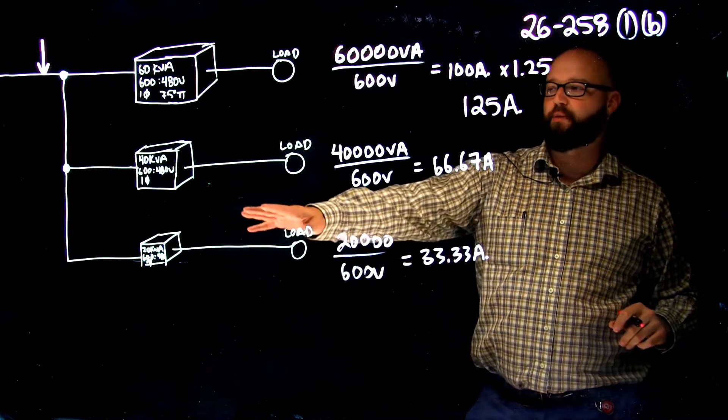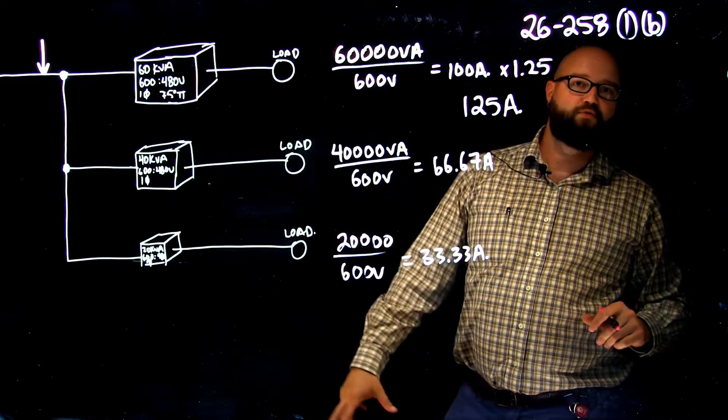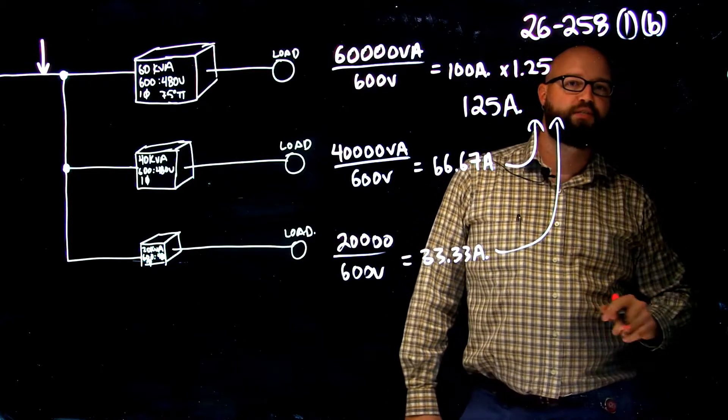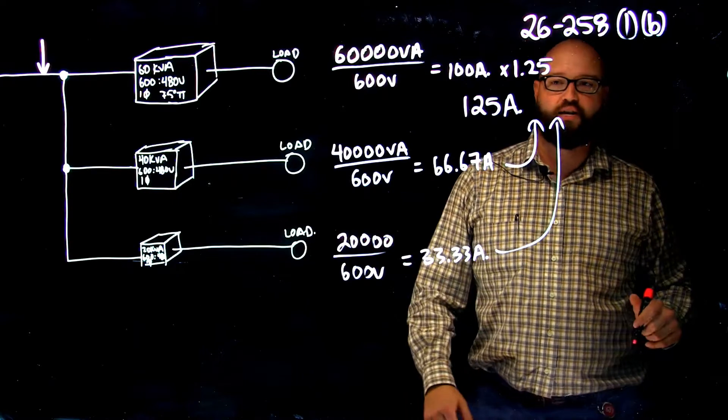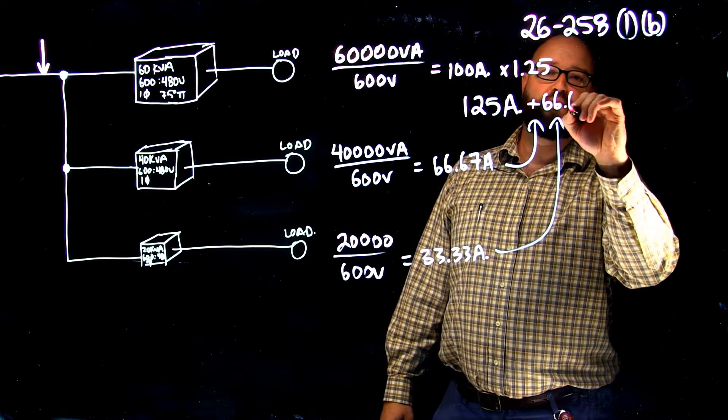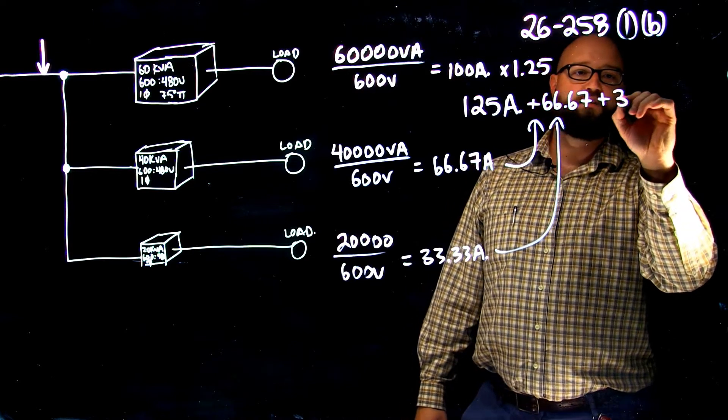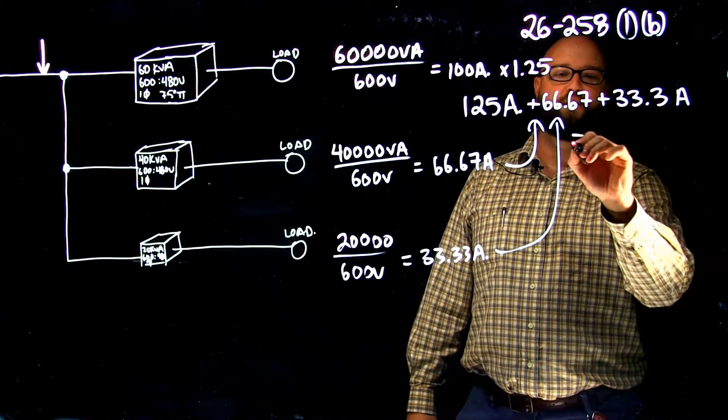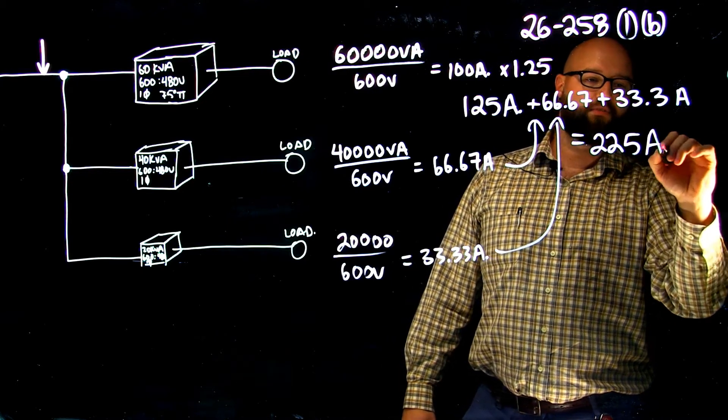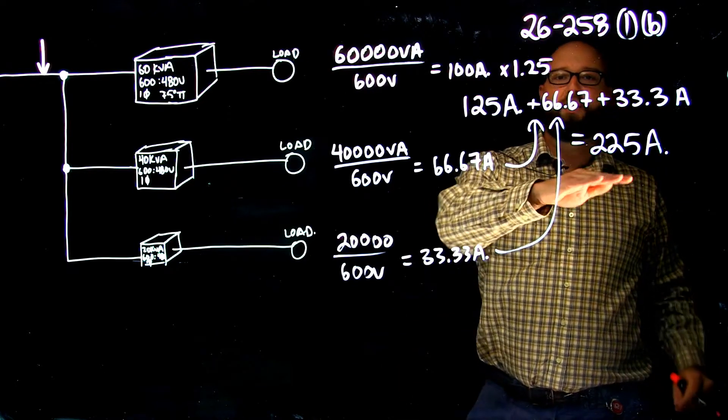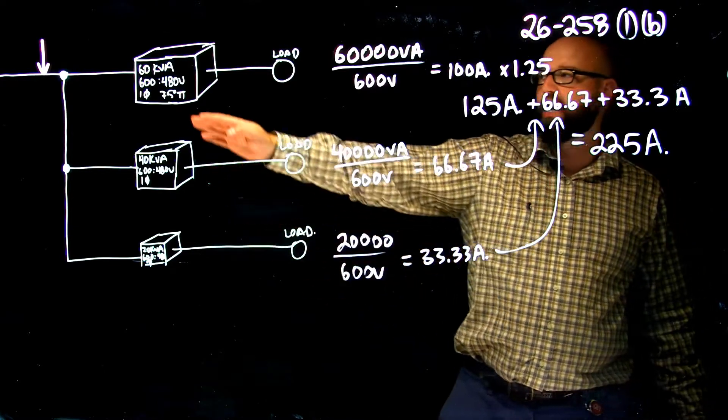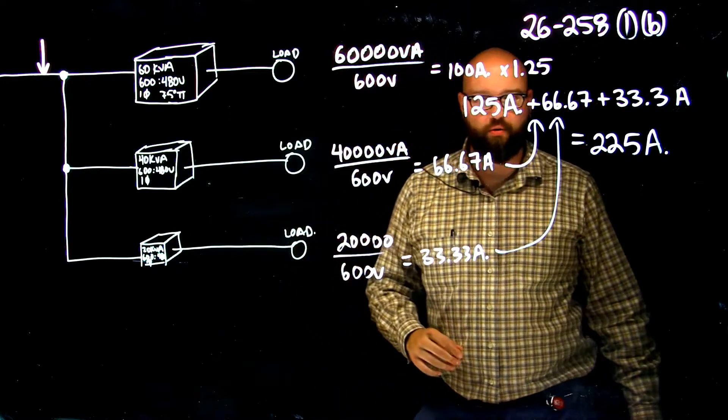Now, all I'm going to do is take the rated primary of my other transformers in the bank, and I'm going to add them right in there. They don't get the 125% treatment. I just add them straight in. So, we have 125 plus 66.67 plus 33.3. We should end up with a number somewhere around 225 amps. That is the minimum size that my conductor can be. That's the minimum capacity of my feeder conductor supplying this group of transformers.